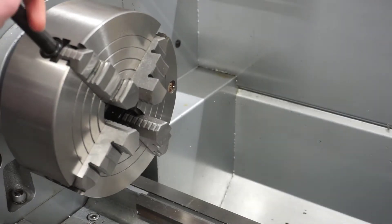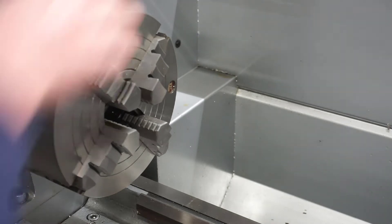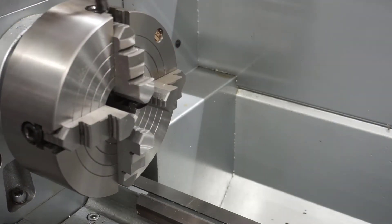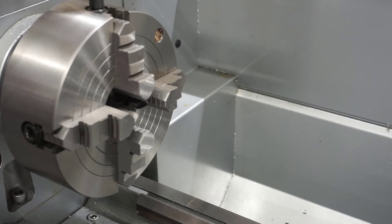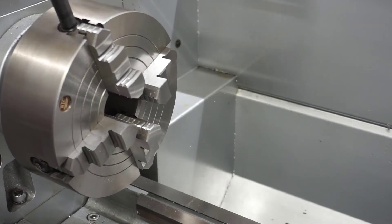You'll start the process by using your chuck key to roughly align the diameter of the jaws to the existing part. You'll notice that you rotate the chuck to get access to the jaws, and you'll use the reference lines to approximately line it up to the size of the part that will go in.